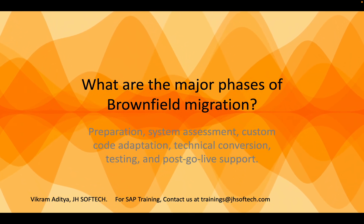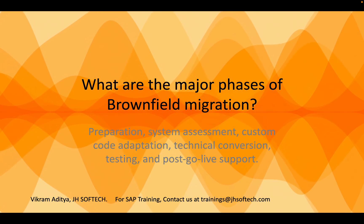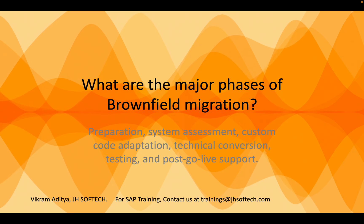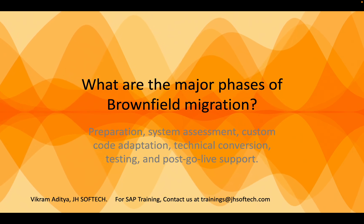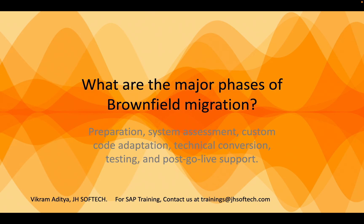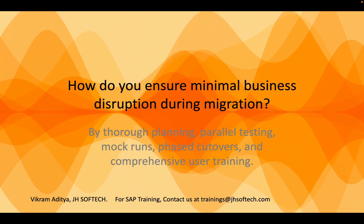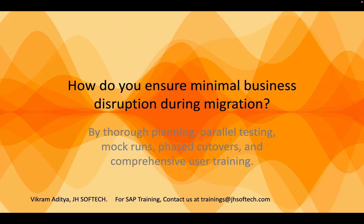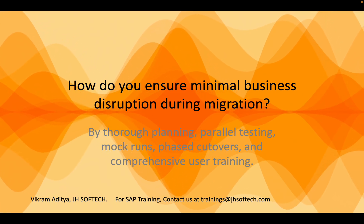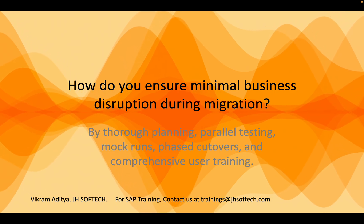What are the major phases of a brownfield migration project? The phases are: preparation phase, system assessment phase, custom code adaptation phase, technical conversion phase, testing, and post go-live support. How do you ensure minimal business disruption during migration? By thorough planning, parallel testing, mock runs, phased cutovers, and comprehensive user training.